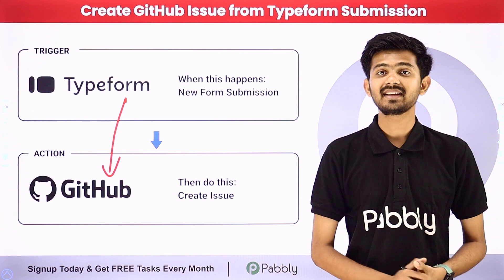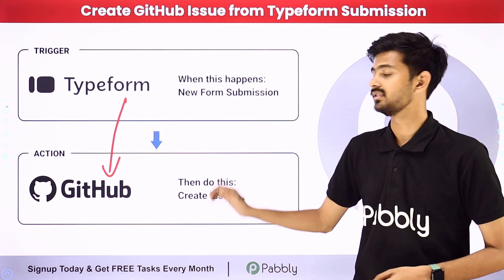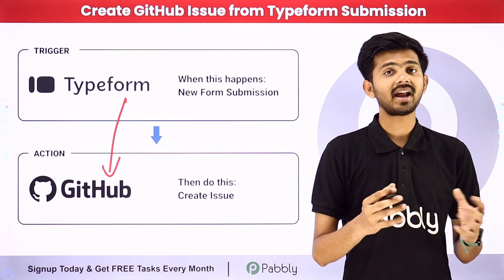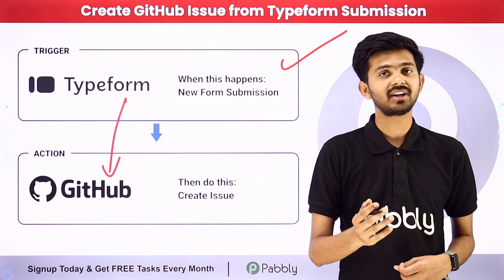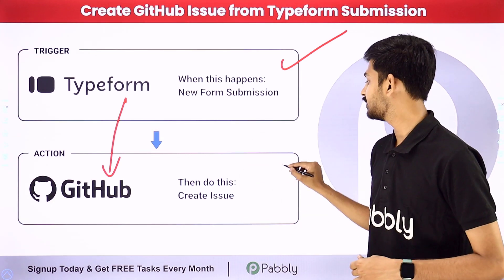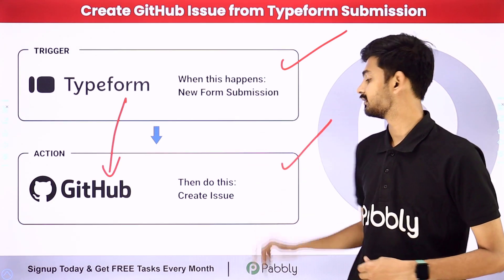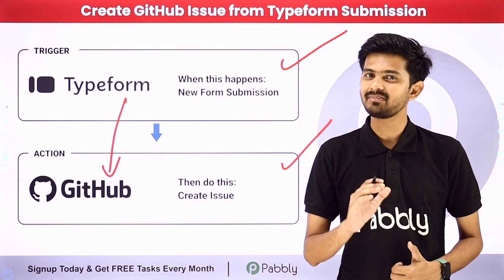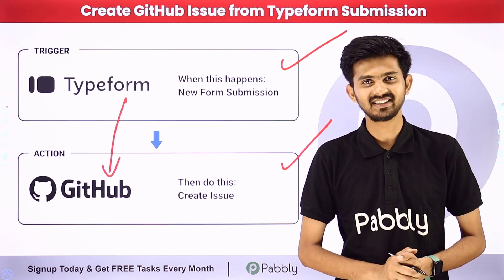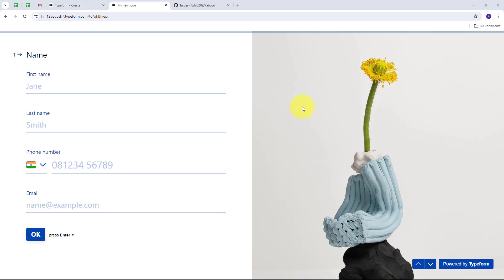In Pably Connect, I have to use trigger and action. In the trigger application I'm going to use Typeform, and in the action application I'm going to use GitHub. Let me take you to my computer screen — today we are going to see how we can create a GitHub issue from a Typeform submission.